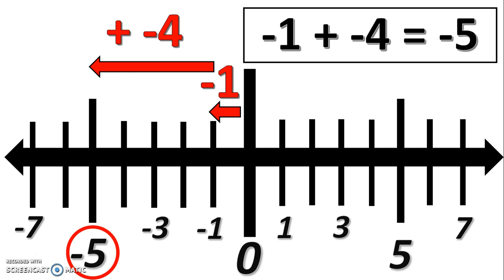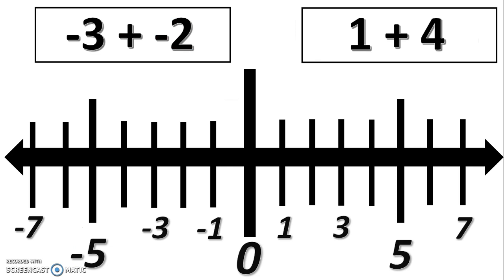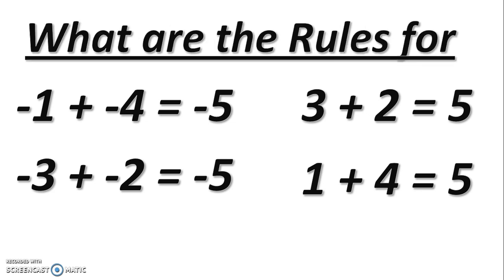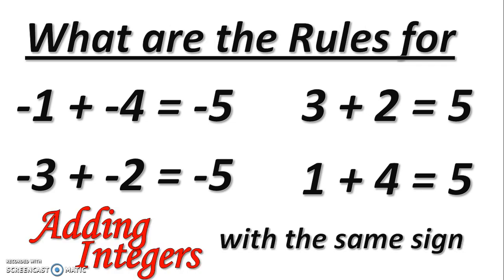We've now added two equations on the number line. Both times, the numbers in the equation had the same sign — positive and positive, or negative and negative. Here are two more problems that you should do on your own using your own number line. Now think about the four problems we've just done — what are the rules for adding integers with the same sign? You should be able to discover them based on the four questions we've done.